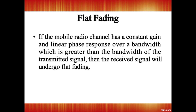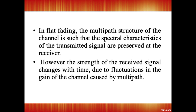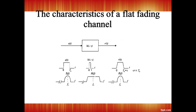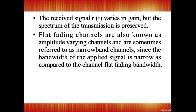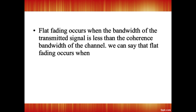Over a bandwidth greater than the bandwidth of the transmitted signal, the received signal will undergo flat fading. The multipath structure of the channel is such that the spectral characteristics of the transmitted signal are preserved at the receiver. However, the strength of the received signal changes with time due to fluctuations in the gain caused by multipath. The received signal r(t) varies in gain but the spectrum of the transmission is preserved. Flat fading occurs when the bandwidth of the transmitted signal is less than the coherence bandwidth of the channel.